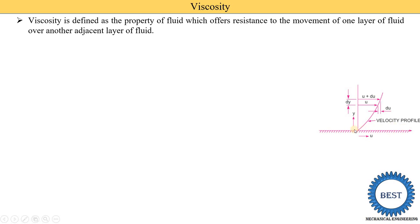At the ground level, the water has zero velocity, and at the top layer of the water it has the maximum velocity. The velocity reduces at every adjacent layer of the fluid — this is called viscosity. So viscosity is a property of fluids.